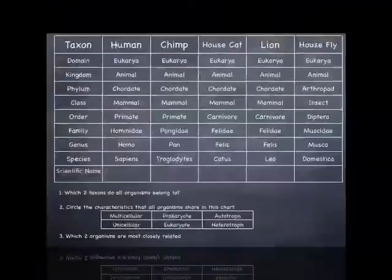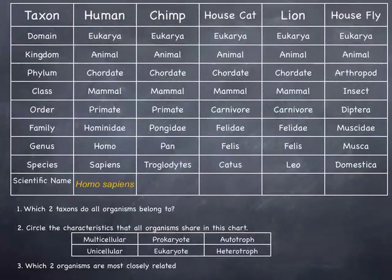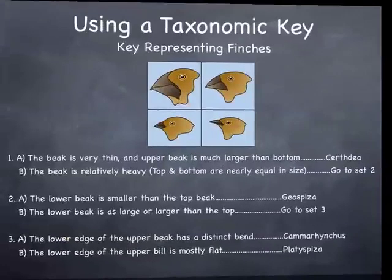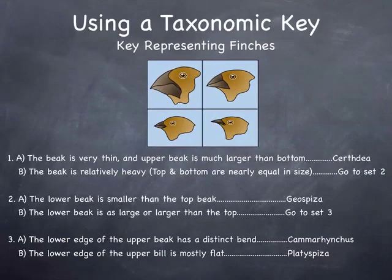We're going to skip this next slide for now. Don't worry about writing anything down. Maybe we'll come back to it sometime. Alright, our last topic in this section of the unit is something called dichotomous keys.